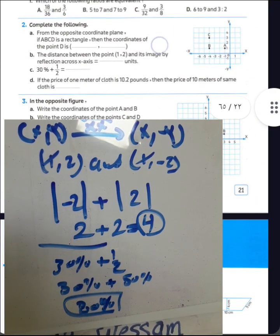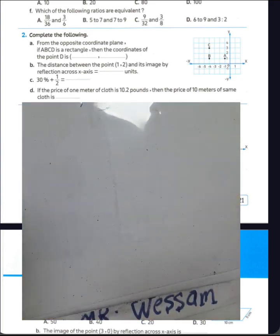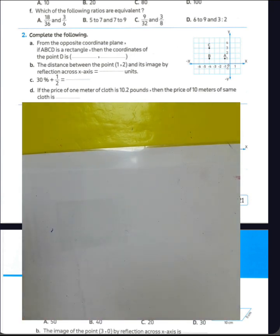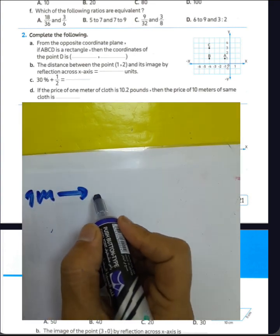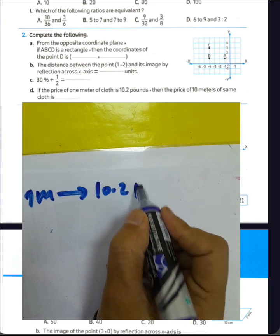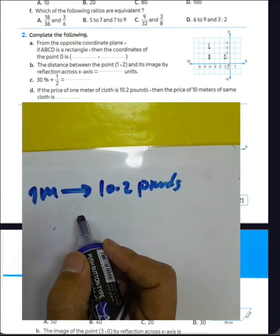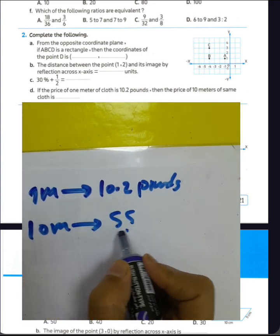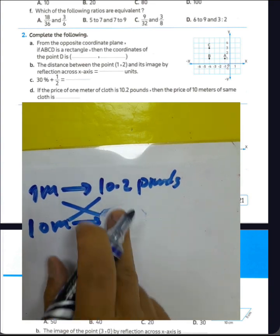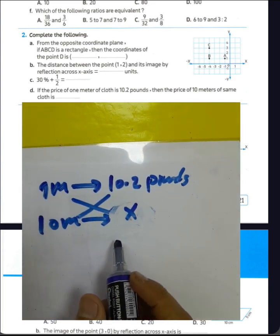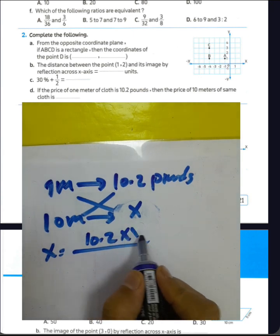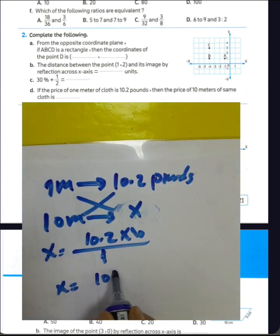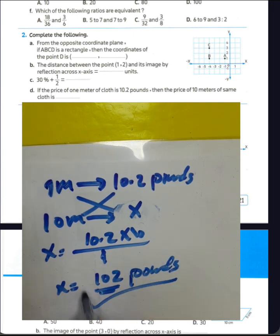If the price of one meter of cloth is 10.2 pounds, then the price of 10 meters of the same cloth equals how many pounds? Using the proportion rule: X equals 10.2 times 10 divided by 1. The value of X is 102 pounds — that is the price of 10 meters.